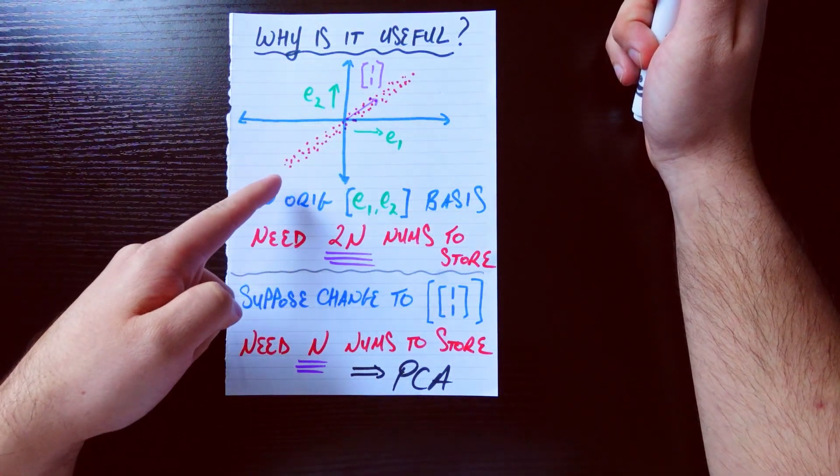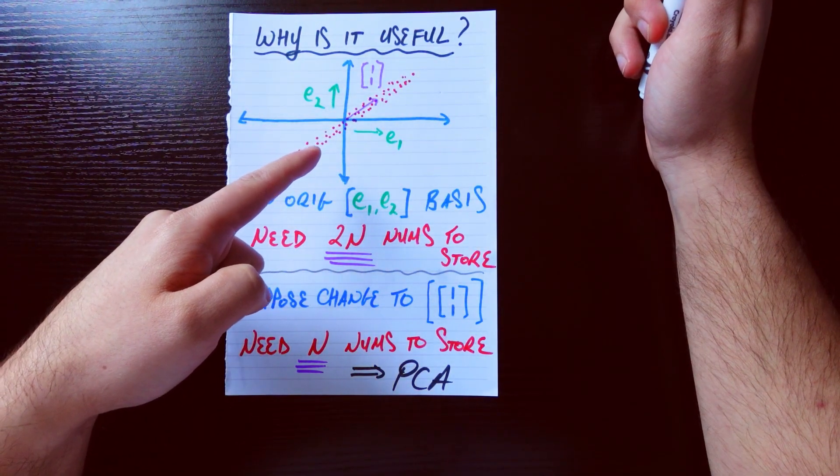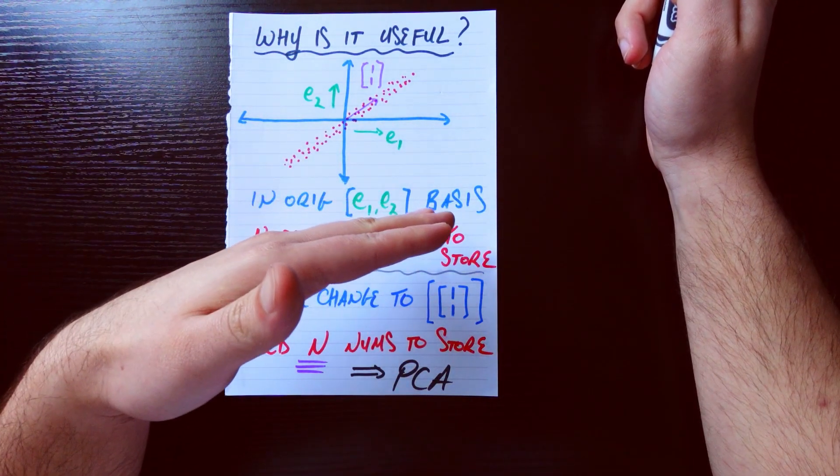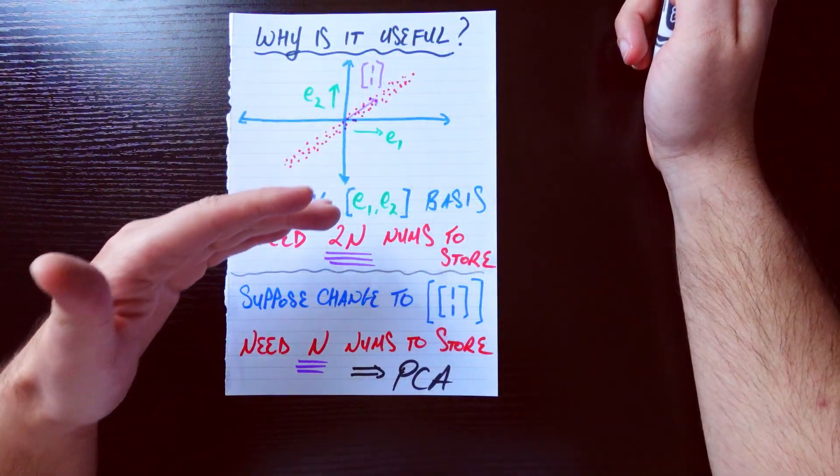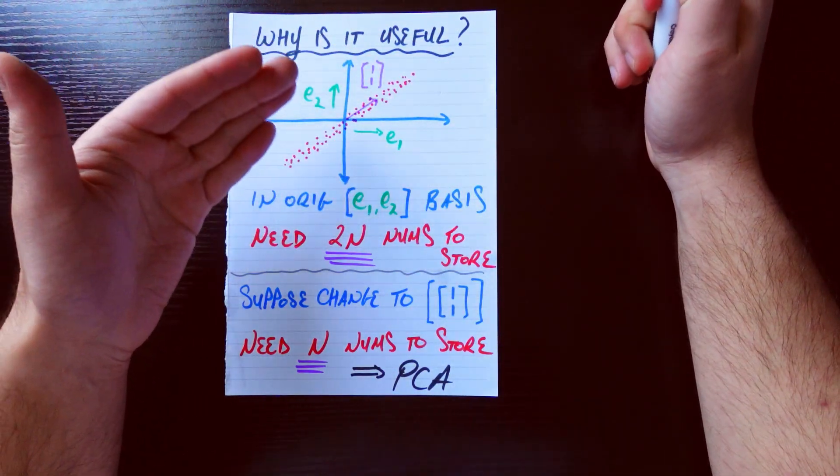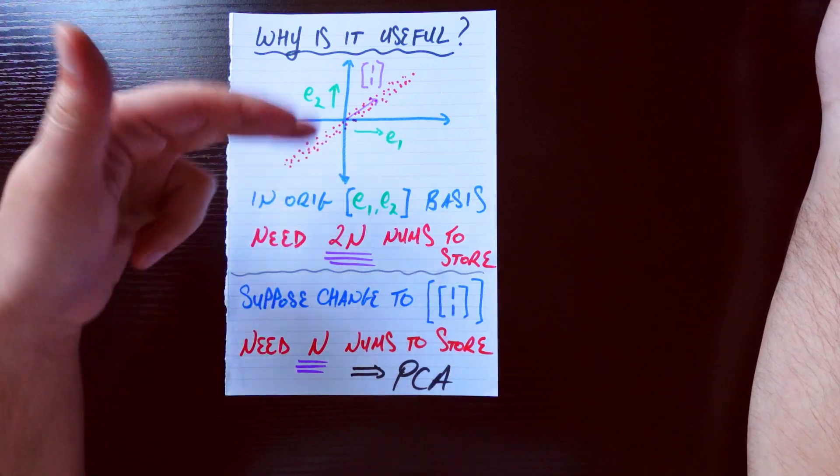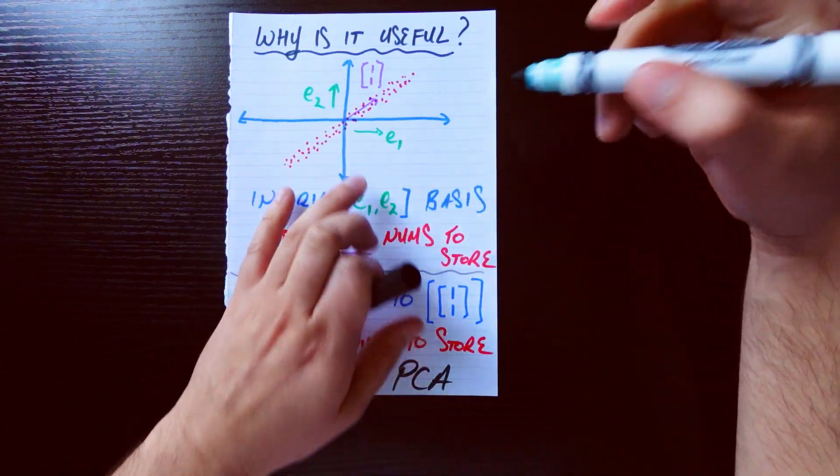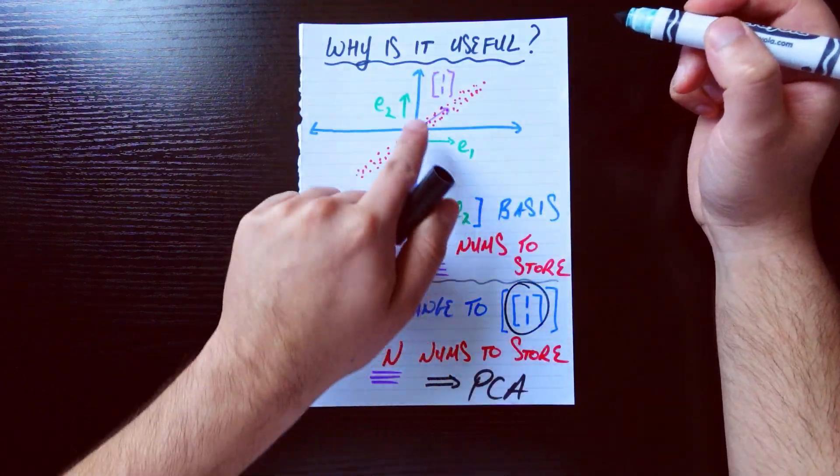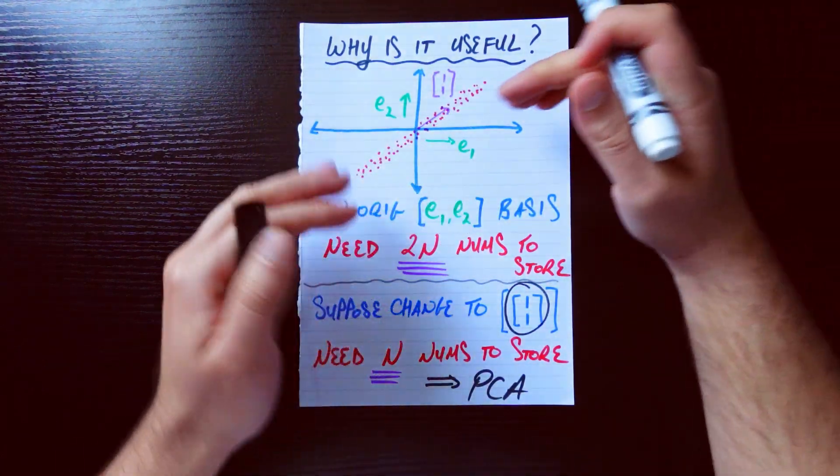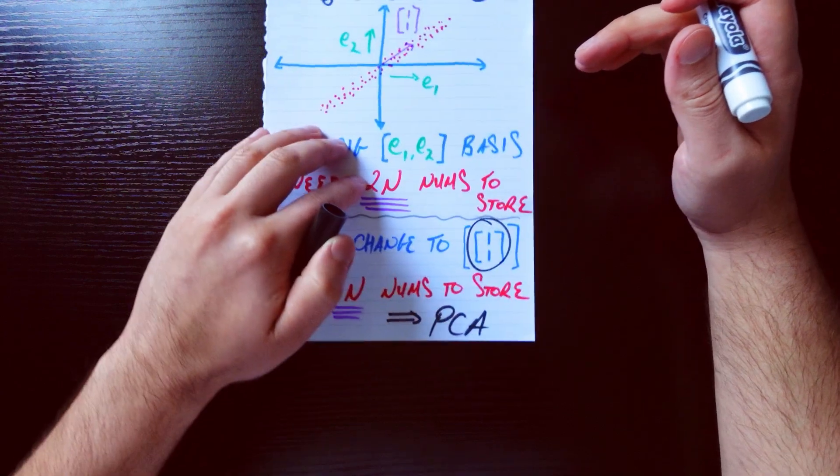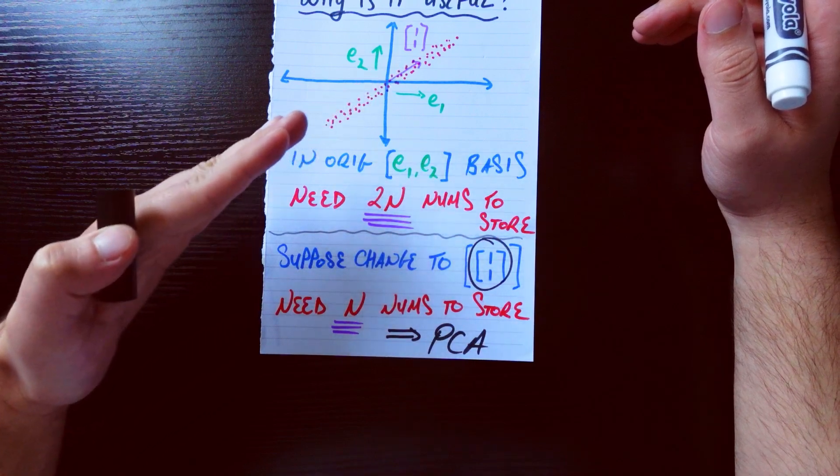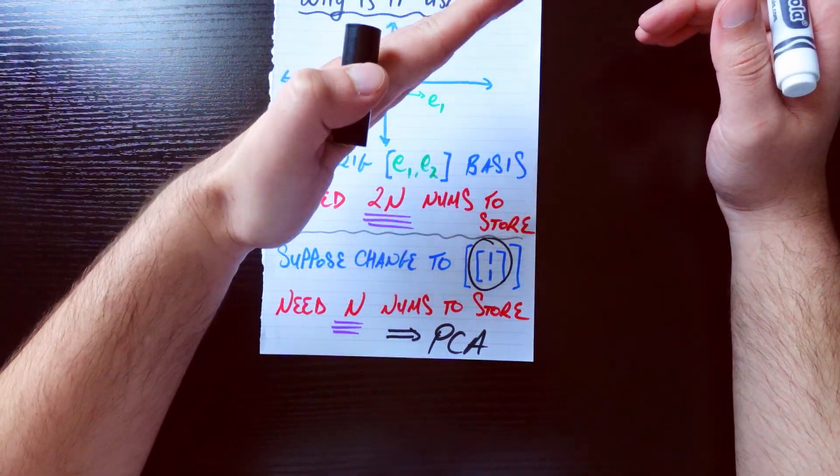If we have this cloud of data points originally represented in e1 and e2, then it takes 2 times n numbers to store this, because there's n data points. And we need to know for each data point what is the contribution from e1 and e2. But let's say we change our basis to just this single [1,1] vector. Then if we're willing to lose a little bit of information here, then we're able to just require n numbers, because I just need to know what is the contribution in that direction.